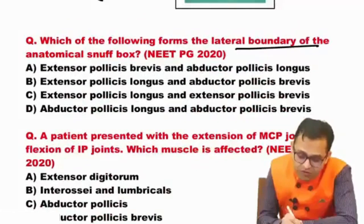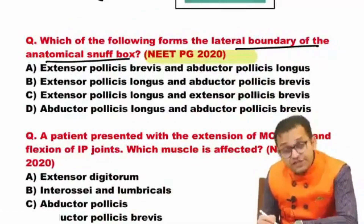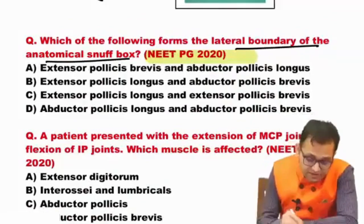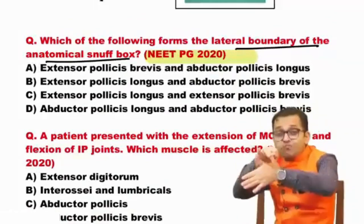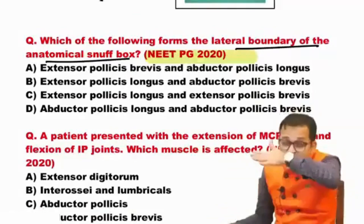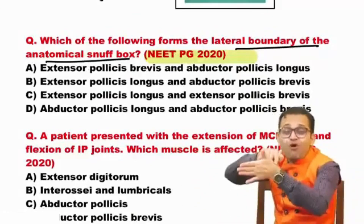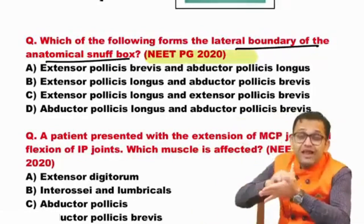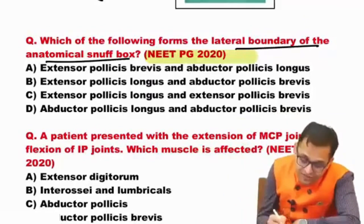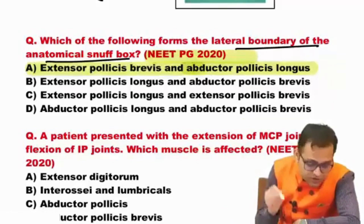Which of the following forms the lateral boundary of the anatomical snuffbox? This is a NEET PG 2020 question. The anatomical snuffbox is a box-like structure in the anatomy where snuffing activity is performed. The lateral boundary is formed by the abductor pollicis longus and extensor pollicis brevis. So the answer is A.